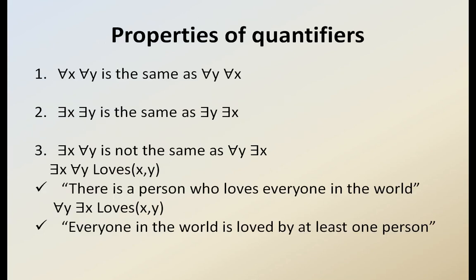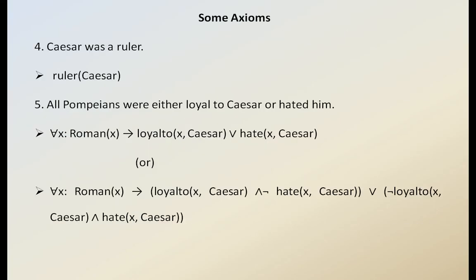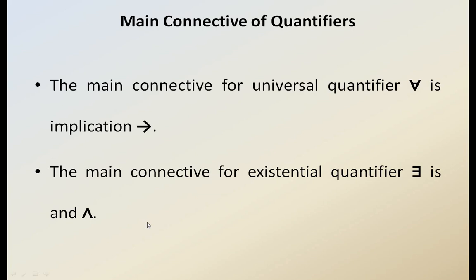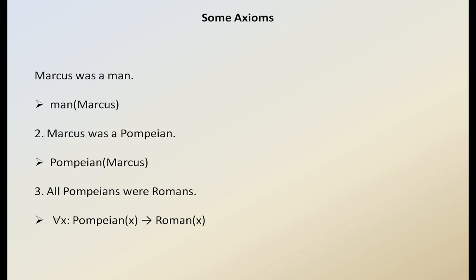Next we look at some axioms. For example, in predicate logic: Marcus was a man — represented as man(Marcus); Marcus was a Pompeon — pompeon(Marcus); all Pompeons were Romans — represented as for all X, pompeon(X) → roman(X). Here we use the implication connective with the universal quantifier, consistent with what we discussed earlier.